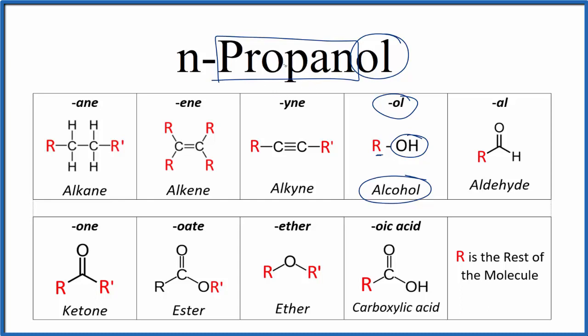So we have a lot of information. We know we have three carbons, some hydrogen atoms, and it's going to end in OH. And we know the OH will be on the end because n means normal. This is also called 1-propanol. So let's write the chemical formula for 1-propanol, also called n-propanol.